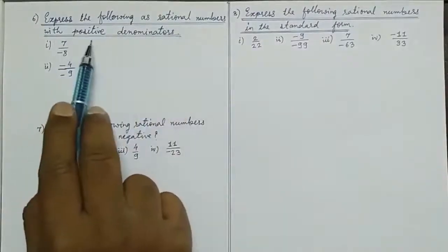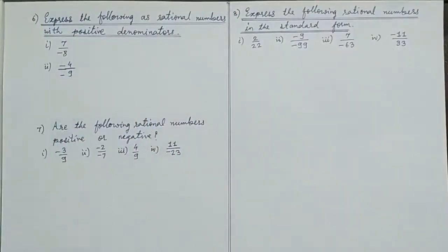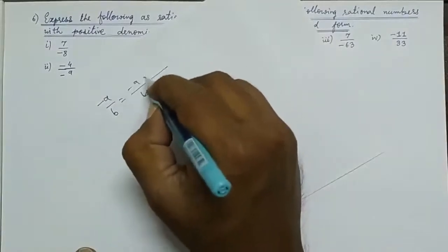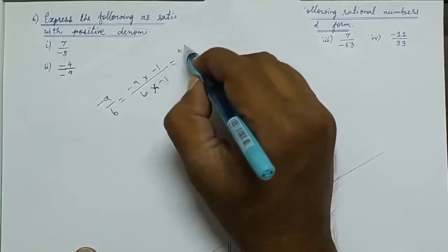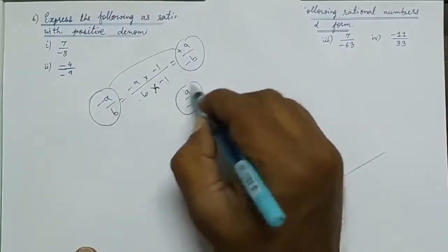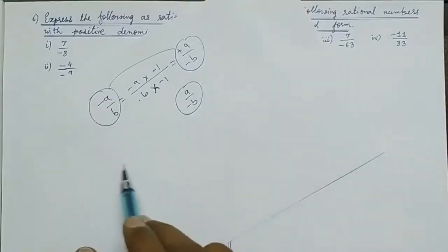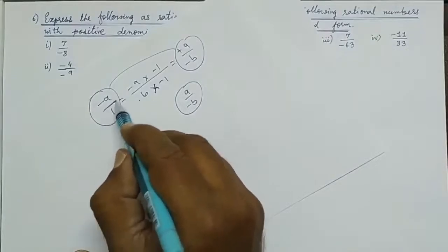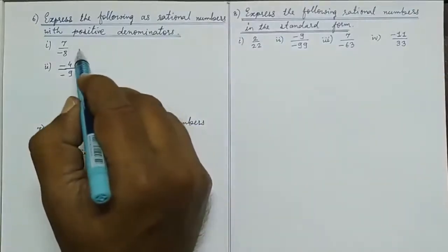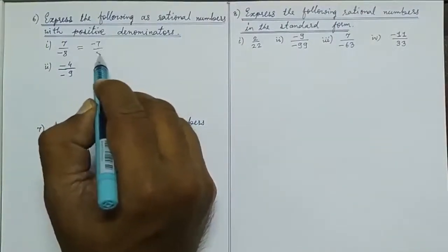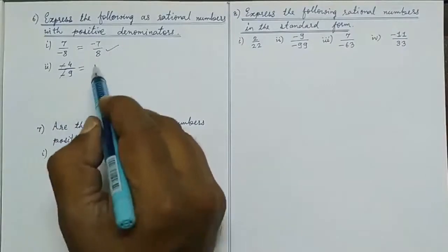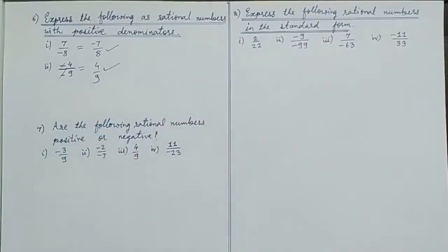Express the following as rational numbers with positive denominator. We need to write the denominator in positive form. If we have minus a upon b, multiplying numerator and denominator by minus 1 gives: minus into minus becomes plus for denominator, and plus into minus becomes minus for numerator. So we can change the minus from denominator to numerator. In standard form, the denominator must be a positive integer. So minus 7 upon minus 8 becomes minus 7 upon 8. For the one where both are negative, minus minus cancels giving 4 upon 9.